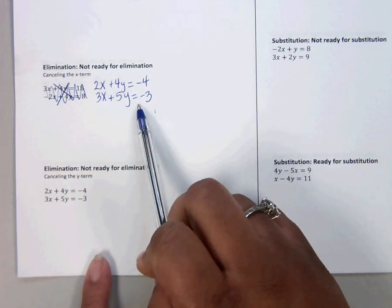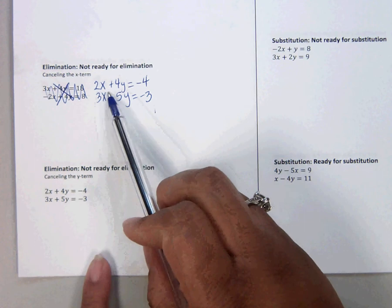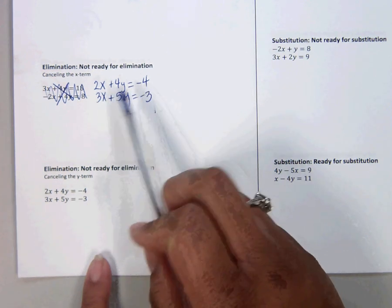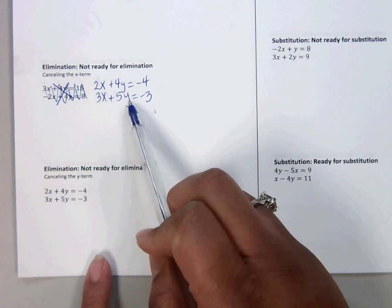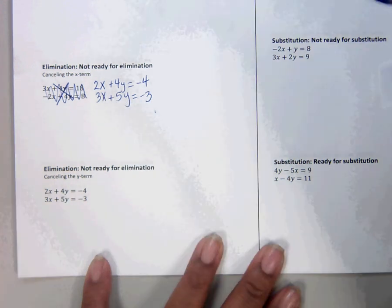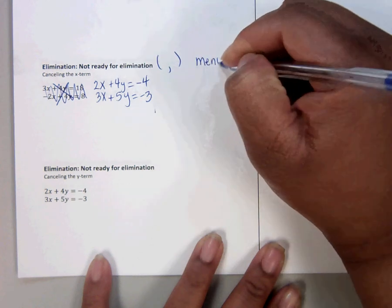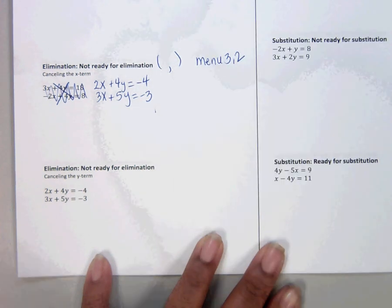So let me give you a moment to write that down. 2x plus 4y equals negative 4. 3x plus 5y equals negative 3. Again, we are doing minus 3, 2 by hand, and we're trying to find the solution by hand.